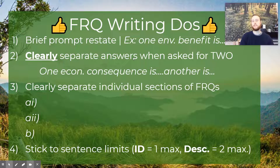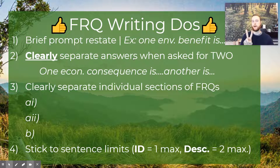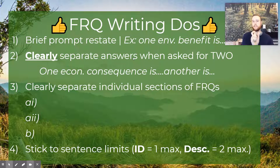You should also clearly separate your answers when you're asked for two. Simply say 'one economic consequence is' and then 'a second economic consequence is' or 'another consequence is.' Be really clear, because your reader is only going to consider your first two options if you're asked for two answers. You don't want to accidentally segue into an incorrect answer or be unclear about whether you're providing two answers. Signal clearly: here's my first answer, here's my second answer, and then you're done.